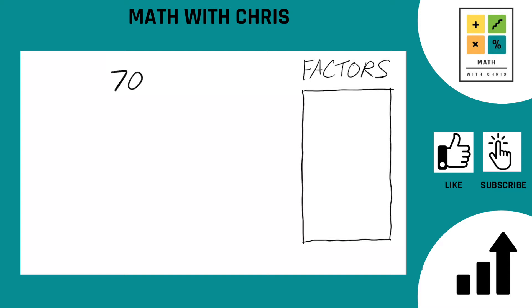First thing we always do is bank the two easiest numbers. That's going to be 1 and the number itself, 70. Any two numbers that multiply together to give us 70? We're going to be using a factor tree here. So we need two numbers that multiply to give us 70. You can pick anything you can think of that works. How about 7 times 10? 7 times 10 is 70.